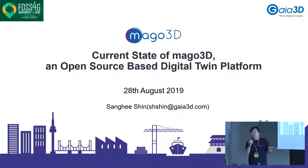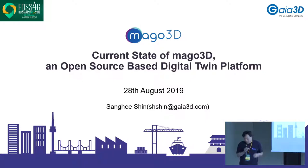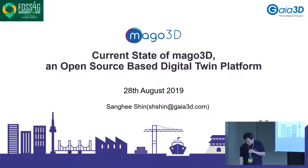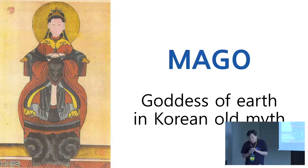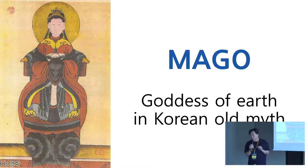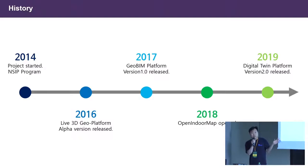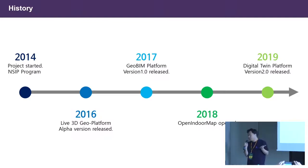How many of you have heard about Mago 3D? Today I am talking about the current state of Mago 3D. Mago is a goddess of earth in Korean old myths. This project is an open source project funded by the Korean government, started in 2014. At the time, the target of this project was developing a live 3D geo platform.